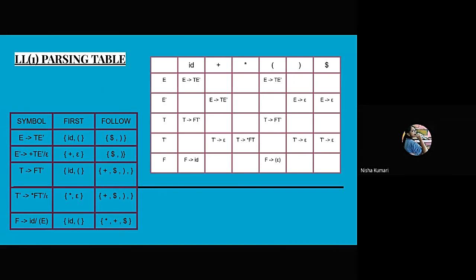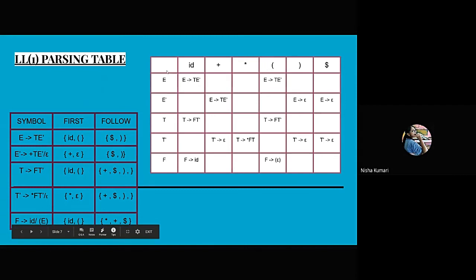LL1 parsing is basically a top-down parsing. If two alternatives for a variable are present, we need to determine which alternative to use, since the main purpose of top-down parsing is to find out what is the first production generated by the symbol. The terminal symbols used in the table are id, plus, star, opening bracket, closing bracket, and dollar — because the input string always ends with dollar.